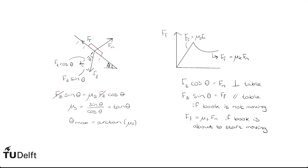So what did we do? First, we made a drawing. We put in all the force vectors. Then we decomposed them into components perpendicular and parallel to the table, and from that we wrote down two equations. Then we combined those equations to get our answer, and we checked that our answer actually answers the question — we were asked for the angle — and that it makes physical sense.